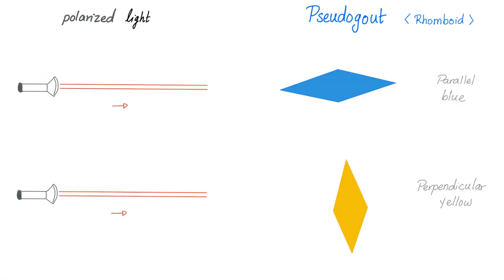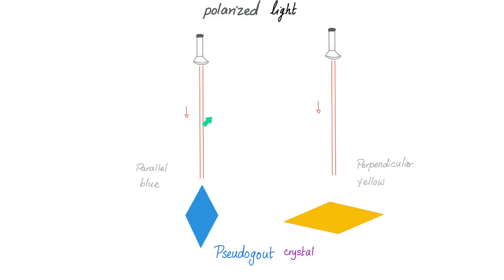Under polarized light, pseudogout crystals are blue when parallel to the plane of polarized light and yellow when perpendicular. Notice the rhomboid-shaped crystals made of calcium pyrophosphate dihydrate. When you rotate the plane polarized light, the colors switch — blue in parallel, yellow in perpendicular — confirming weakly positive birefringence.